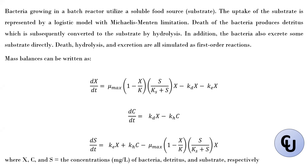We have bacteria growing in a batch reactor and it utilizes a soluble food source called substrate. The uptake of the substrate is represented by a logistic model with a nutrient limitation. Death of the bacteria produces detritus, which is subsequently converted to the substrate by hydrolysis.